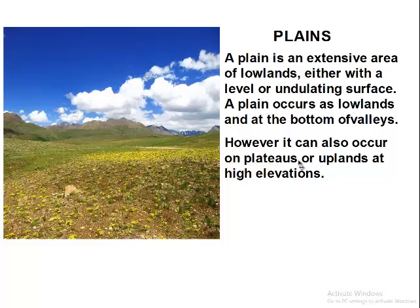In our previous lesson, we looked at Plains — what Plains are and the types of Plains. We said Plains are extensive places of lowlands, either with a level or undulating surface. An undulating surface means a rolling surface, so it may not be flat and smooth; sometimes there may be some bumps on the land.